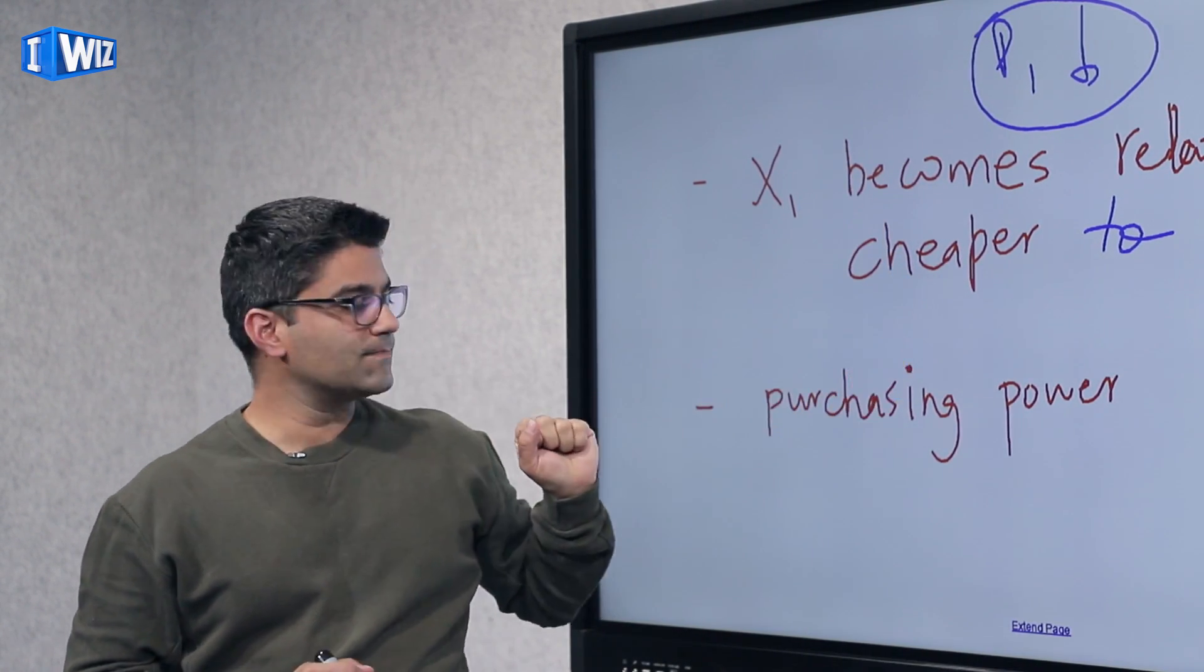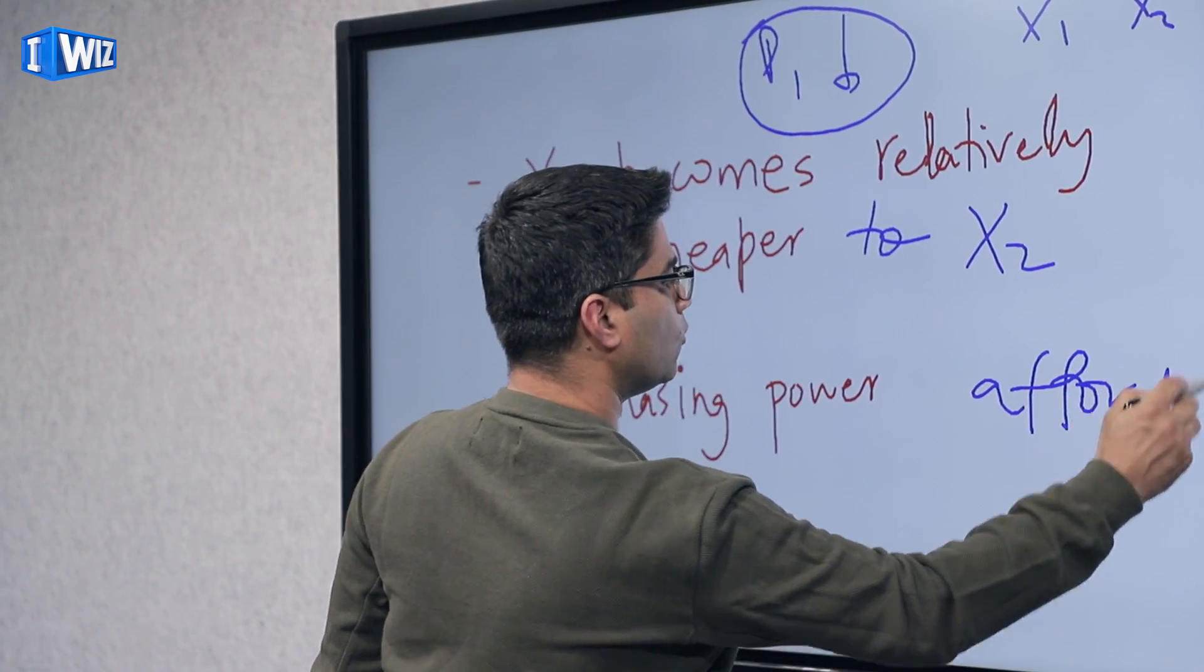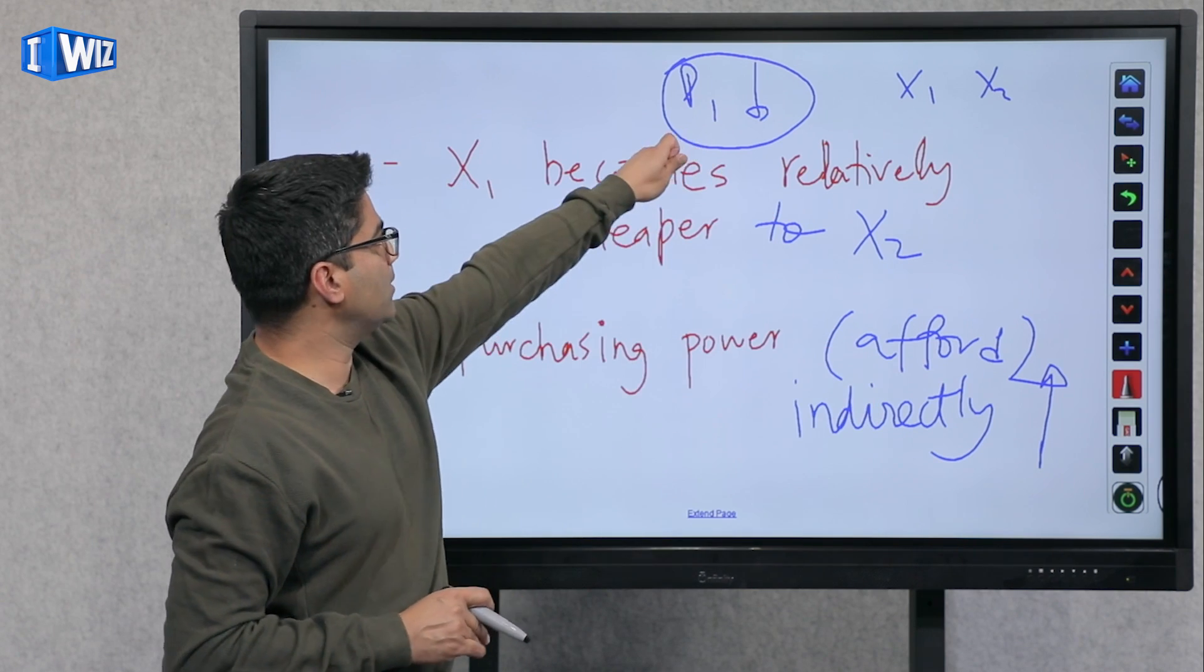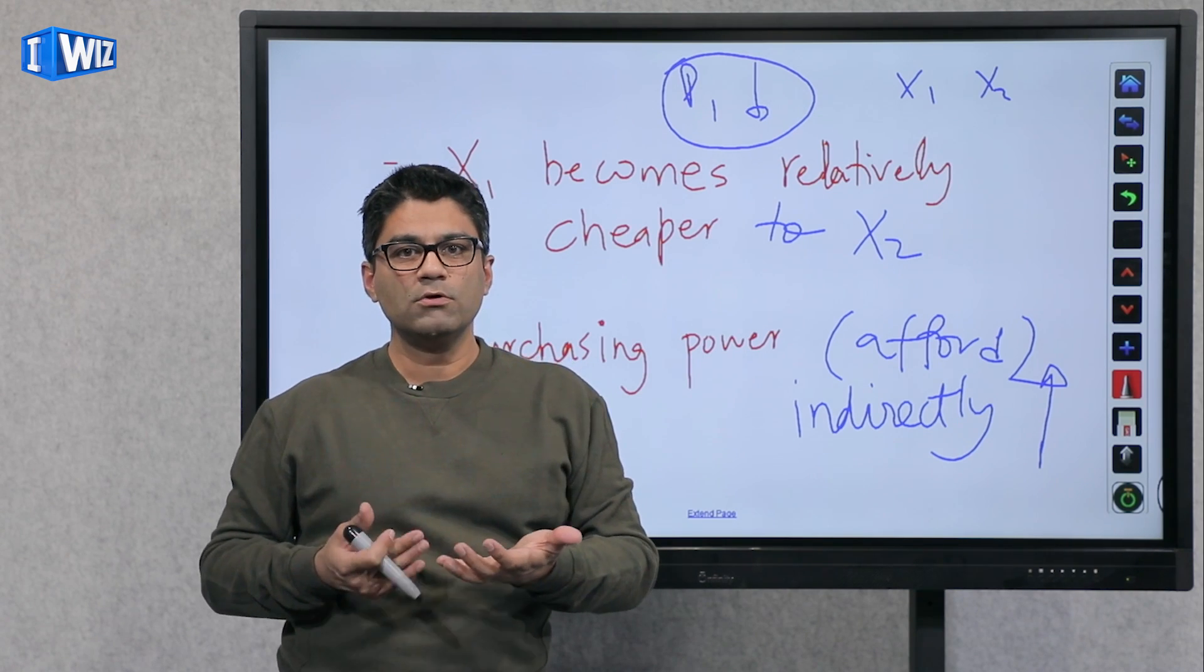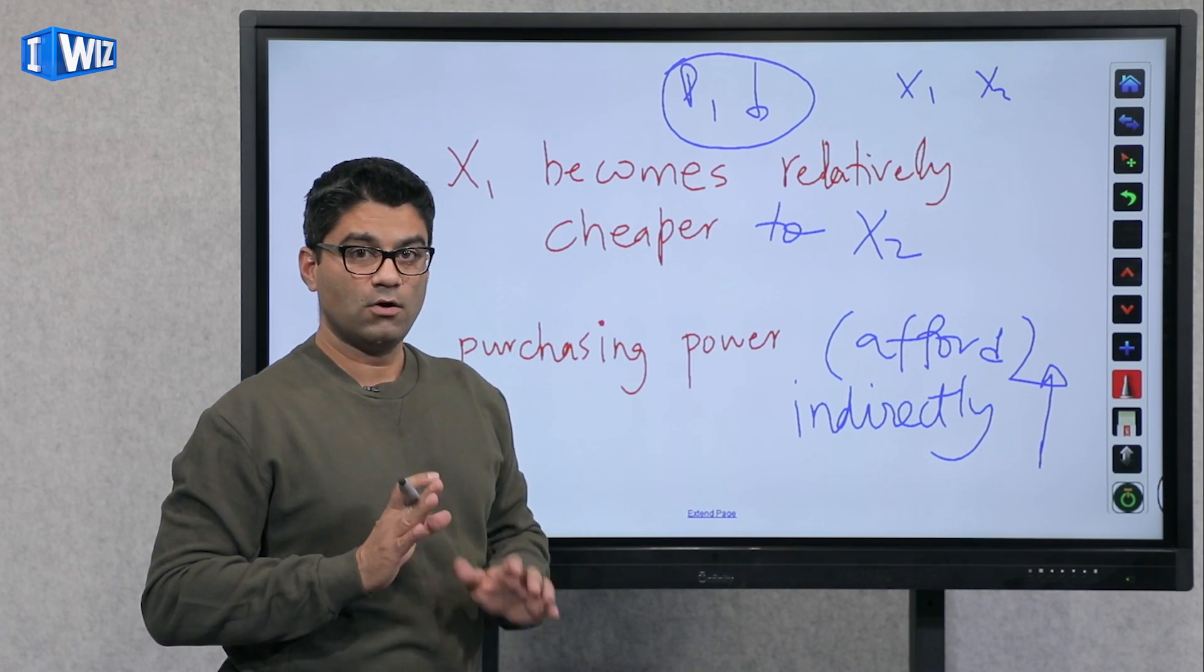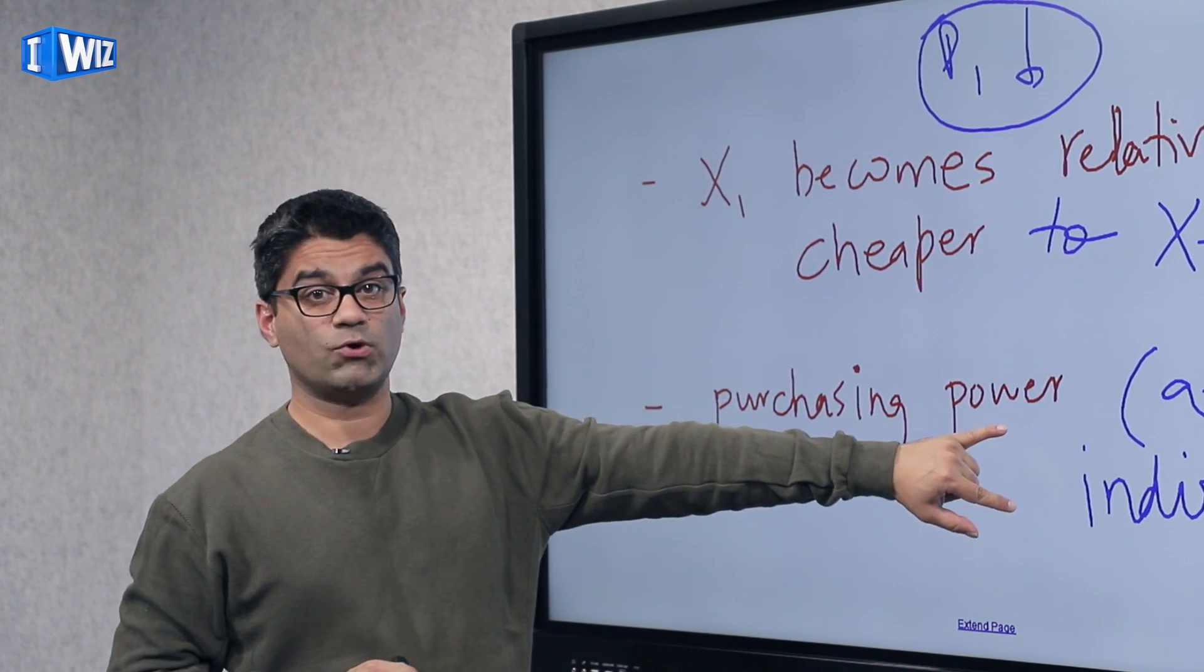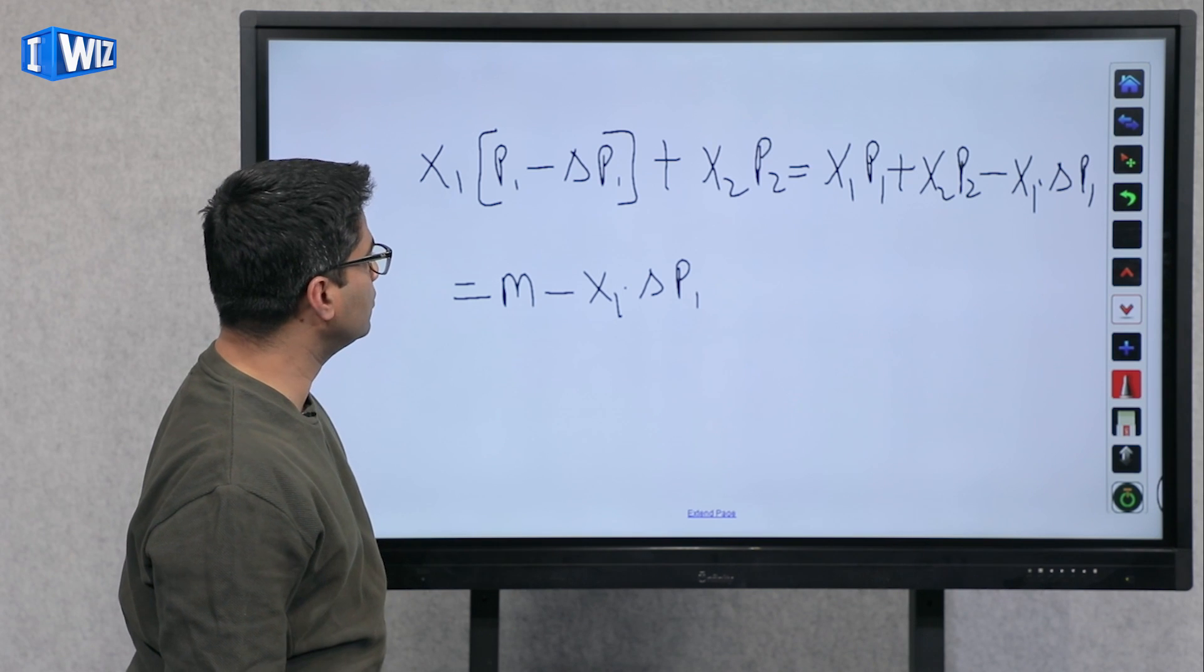Another way to look at this is if price of good one goes down, our purchasing power, the amount that we can afford to buy of both X1 and X2 indirectly is going to go up. So our income is fixed, it's not directly changing. Our income is not directly going up. But if the price of something goes down indirectly, the amount of money that I have, which is fixed, I will be able to afford more with the same amount of income. Think about that for a second. What I'm saying is, if price of good one goes down, given the same fixed income, the amount that I can buy of both goods will be higher. So indirectly, my income is going up. So let's do a mathematical example and see what we mean by that.